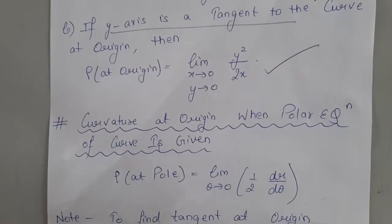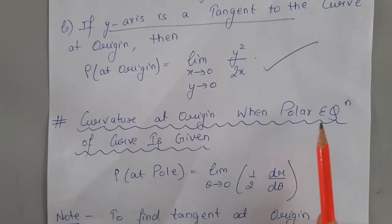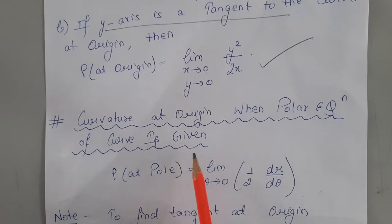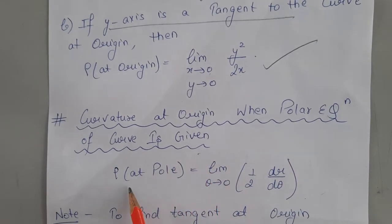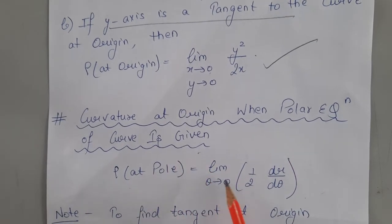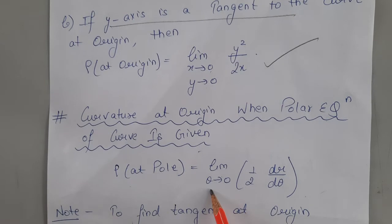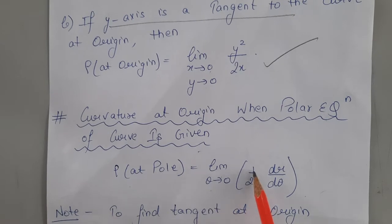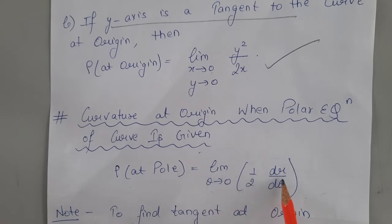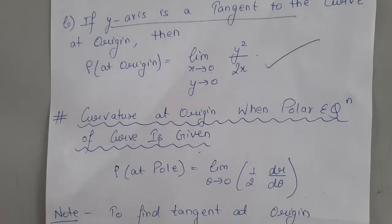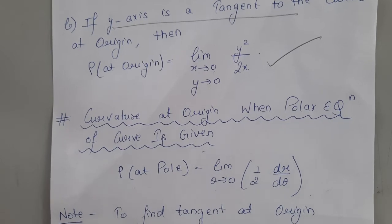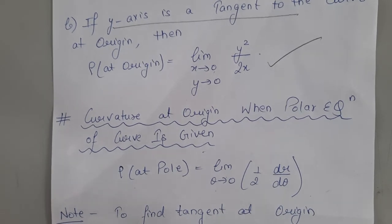Next is the radius of curvature at the origin when the polar equation of the curve is given. Then the radius of curvature equals: limit as θ→0 of (1/2)·(dr/dθ). All these formulas will be used in Exercise 5.3.